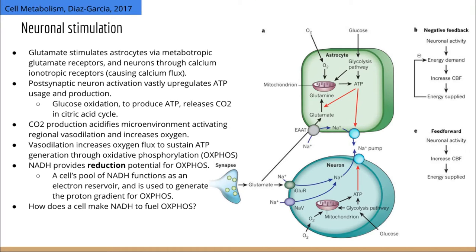All those high-energy electrons stripped off of glucose have to go somewhere, and the cell directs those electrons onto oxygen because oxygen is very electronegative. This is the process of oxidative phosphorylation, where electrons from glucose are used to pump protons in the mitochondria and eventually land onto oxygen. The purpose of pumping protons is to power ATP synthase, which is essentially a turbine that crunches ADP and inorganic phosphate to produce ATP.